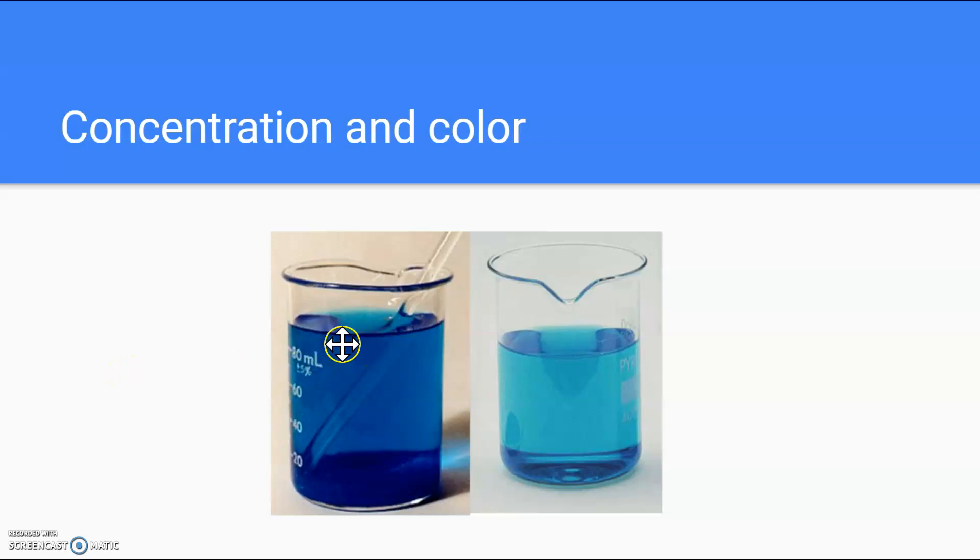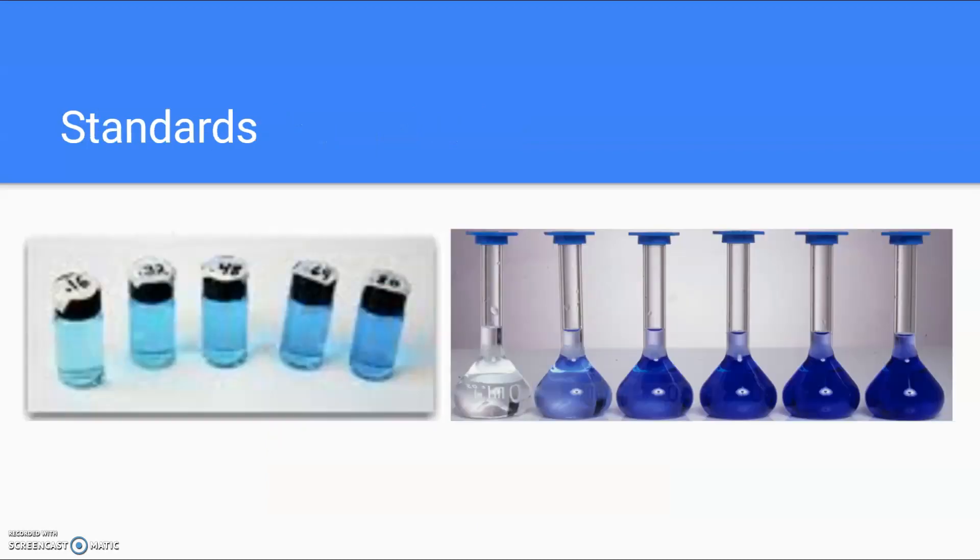So the more concentrated, the darker the solution looks when it has a color, and the less concentrated, the lighter the color looks. You've probably seen this maybe if you made some Kool-Aid. If you had just a little bit of powdered Kool-Aid, it's a very light color mix. And if you add more, you get a darker color. We can use this idea to figure out the concentration of an unknown.